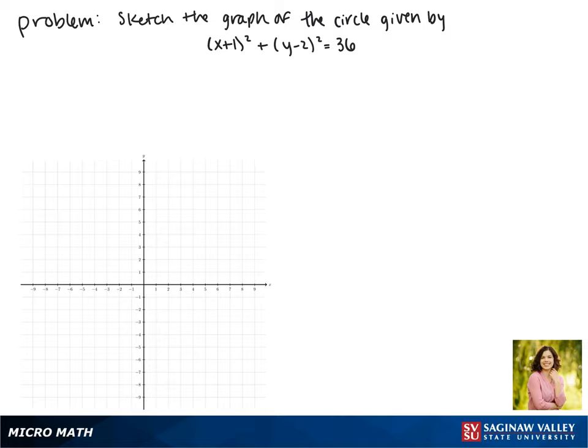Today we'll be graphing the circle given by the equation x plus 1 squared plus y minus 2 squared equals 36. We'll start by finding the center of our circle.